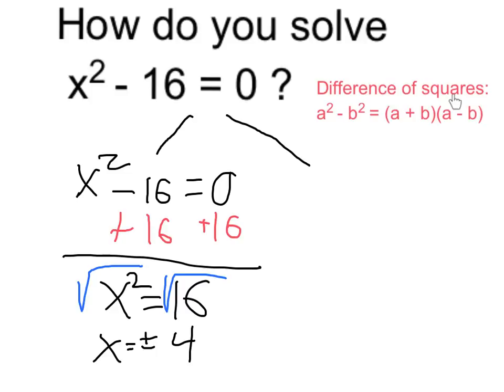An alternative way is to think about this as a difference of squares. We know that if we have something squared minus something else squared, it can be factored as first thing plus second thing times first thing minus second thing.